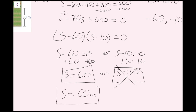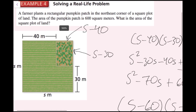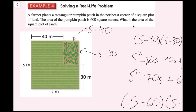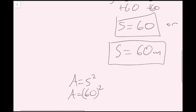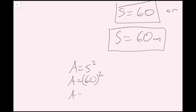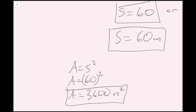But we're not done. The question asks for the area of the square plot of land. Area equals side length squared, so area equals 60 squared, or 60 meters squared, which equals 3,600 square meters. And that is our answer for example 4.